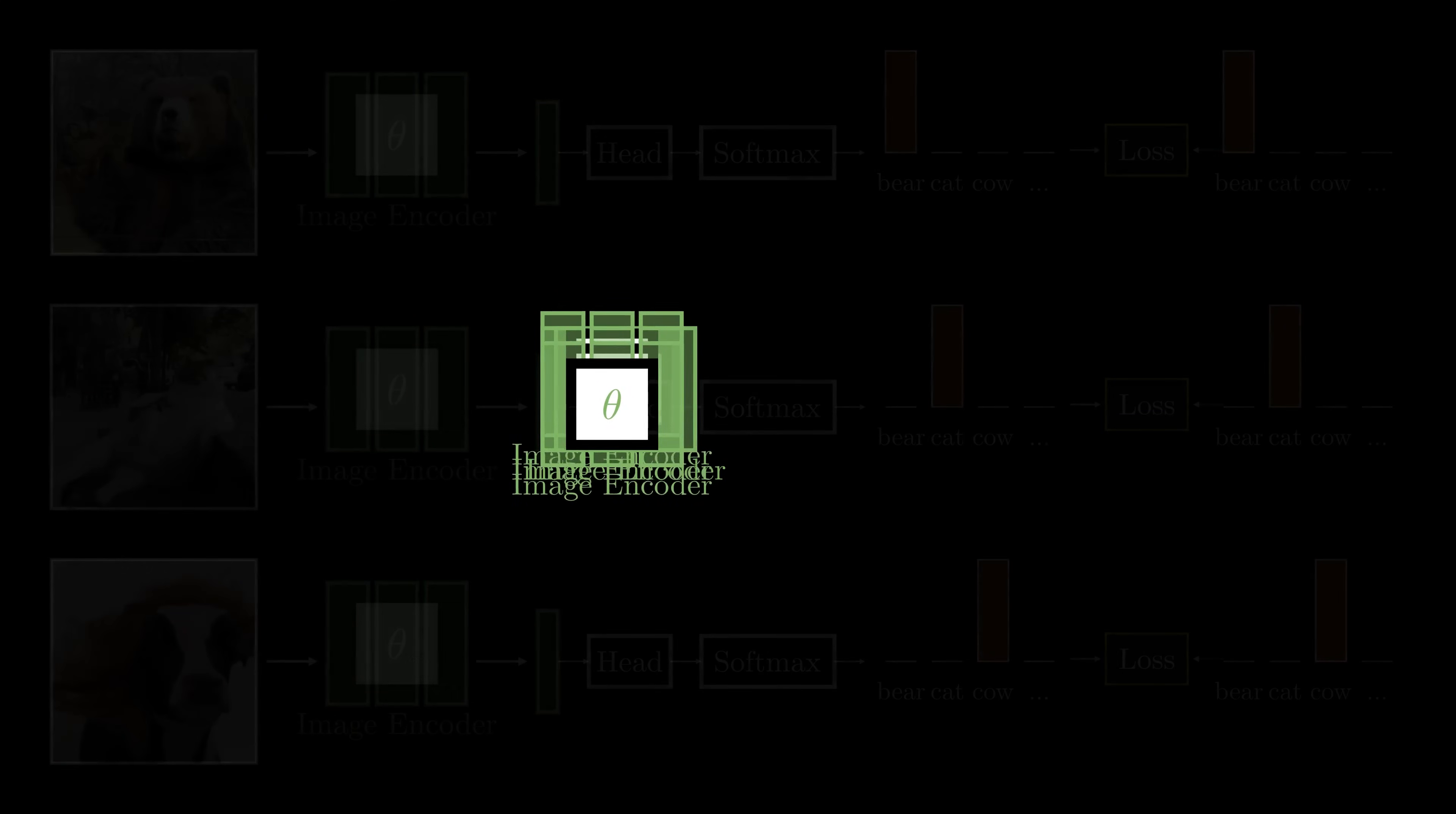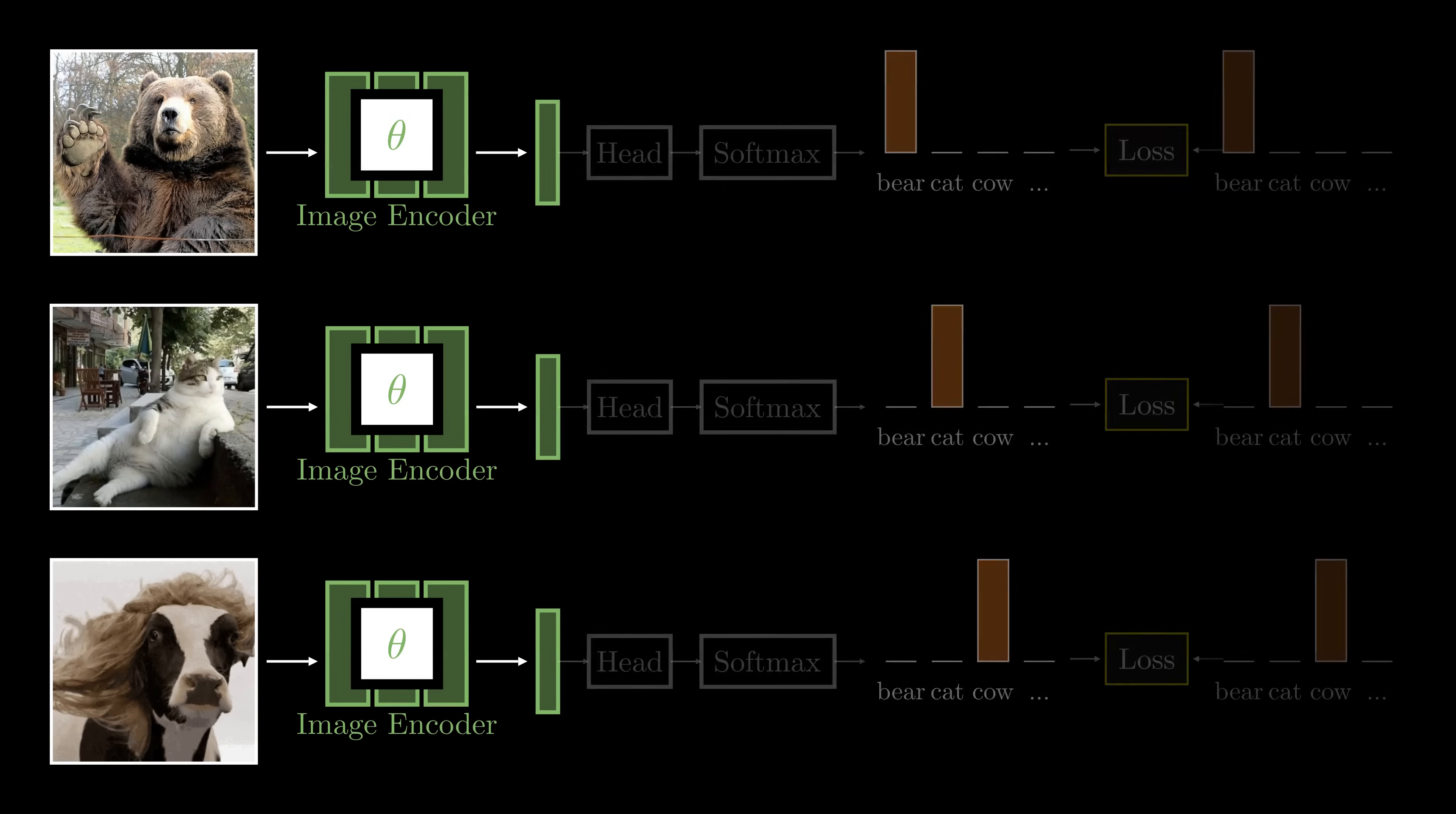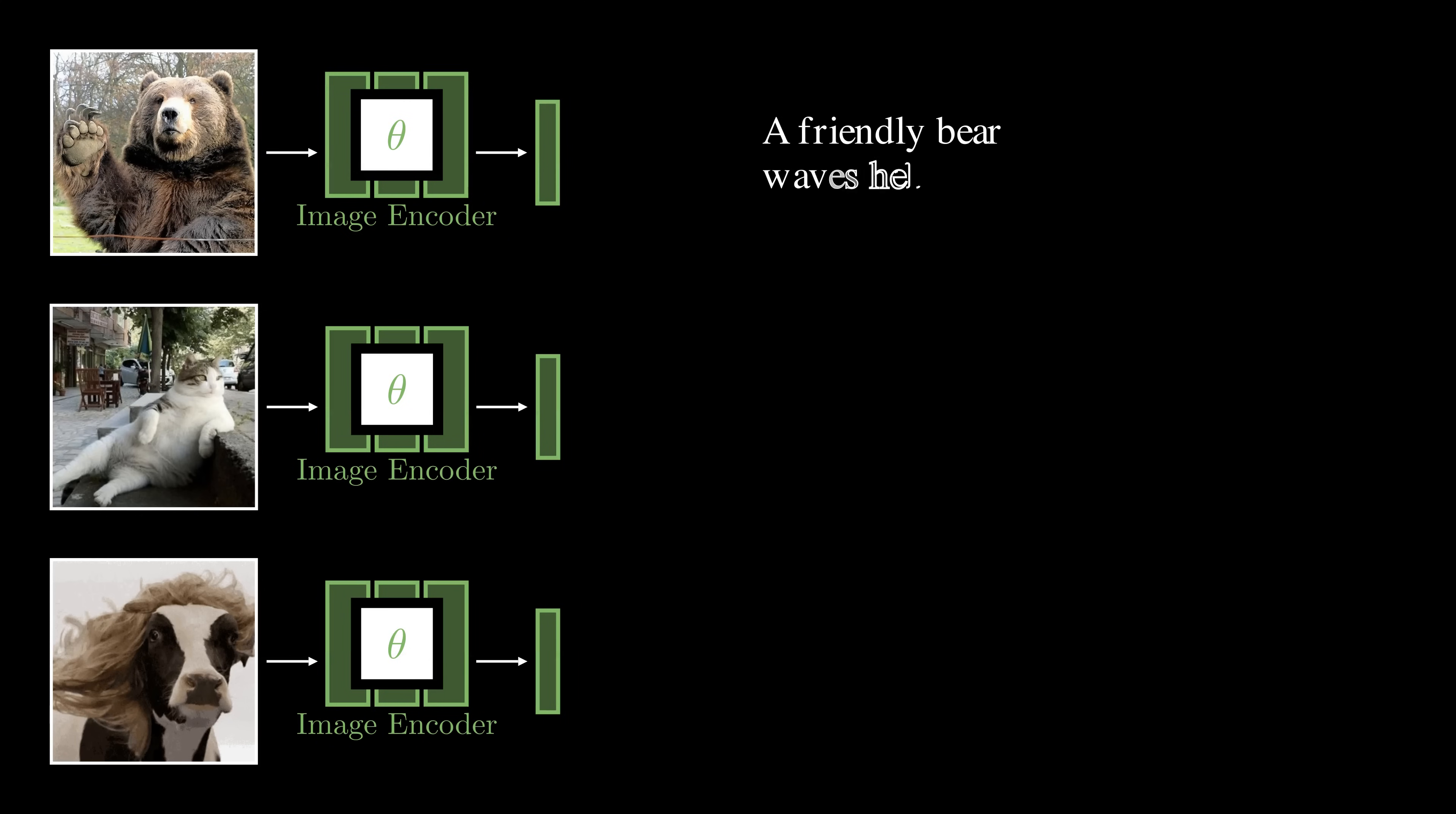However, class labels are often too simple. They only tell us the main object in the image, like bear or cat. But they do not describe all the rich fine-grained details inside the image. Natural language, like captions or descriptions, can give us much more information.